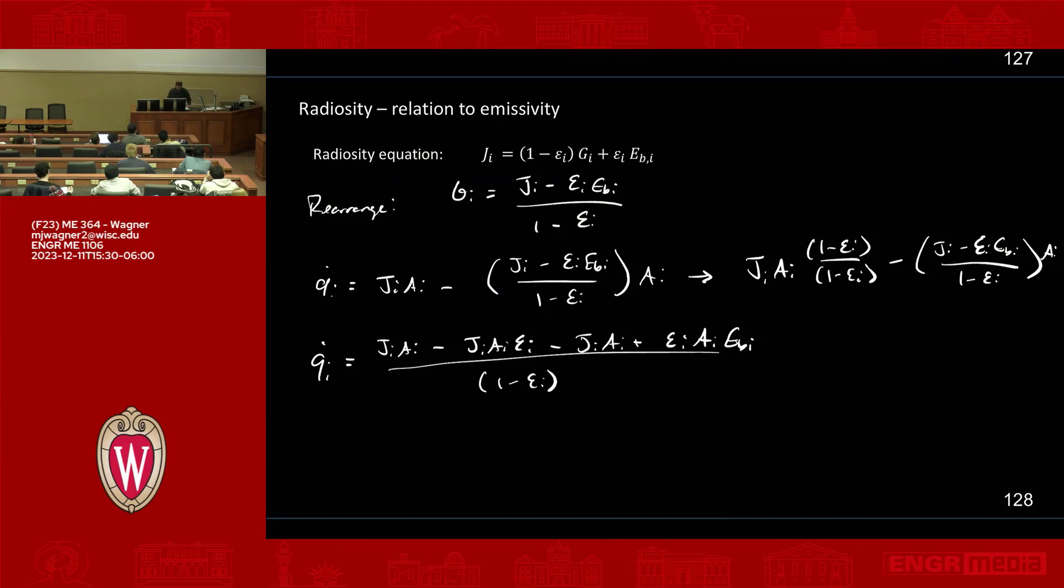We can cancel some stuff out. I can bring the area out in front. I can bring the one minus epsilon, so this goes out in front. And I can rewrite this as q dot i equals a i epsilon i over one minus epsilon i times ebi minus j i.